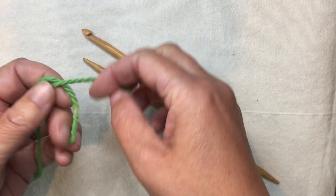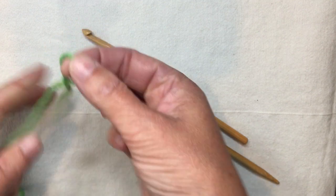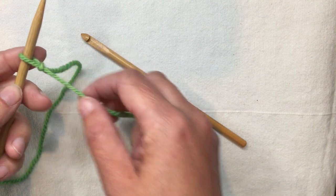You're going to start with a slip knot, like many cast ons do. You do not need a long tail for this one. The slip knot is going to go onto your knitting needle and you want to keep it kind of loose.